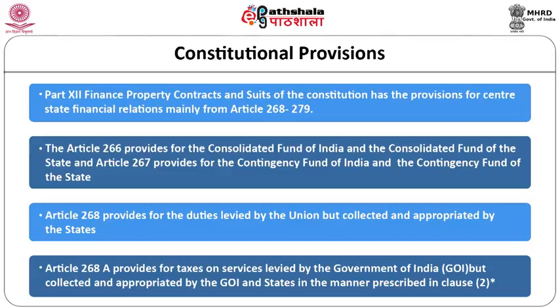Parliament amended Article 268 and inserted Article 268A. Article 268A provides for taxes on services levied by the union government. These taxes are collected by the union government and appropriated by the states in the manner prescribed in clause 2 of this article. Clause 2 provides that how these taxes on services will be collected and appropriated shall be determined by the law made by parliament.